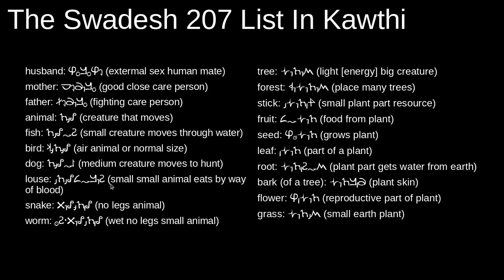The word for snake is literally translated to no-legs animal, and it is chadevid. The word for flower literally means reproductive part of a plant, which I think is fairly accurate. So feyav is flower.